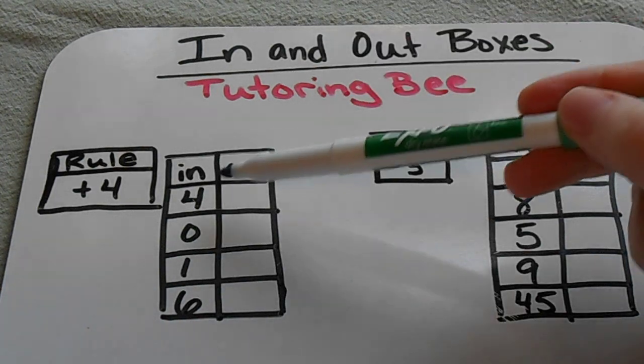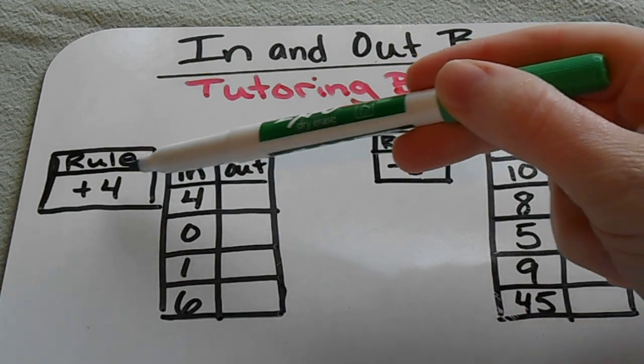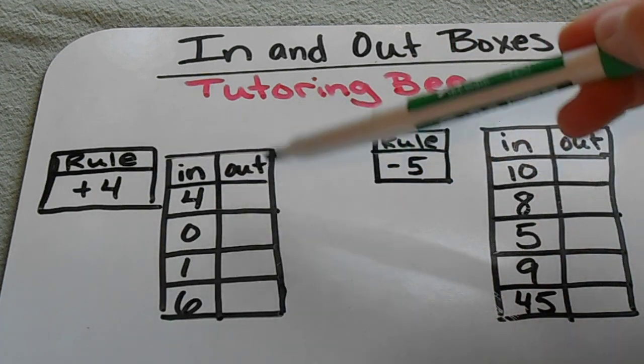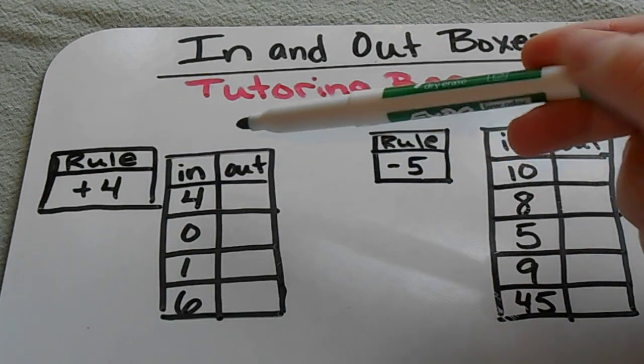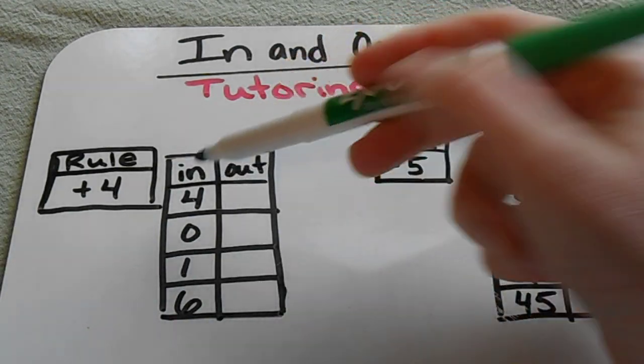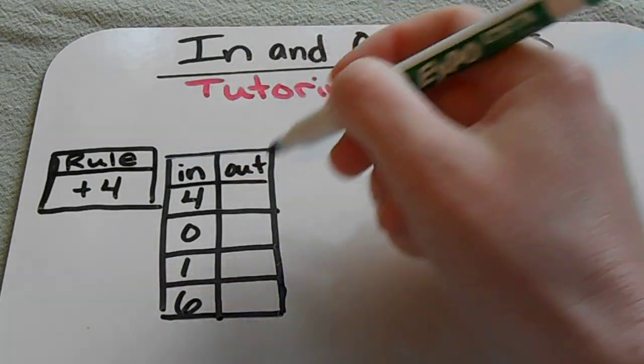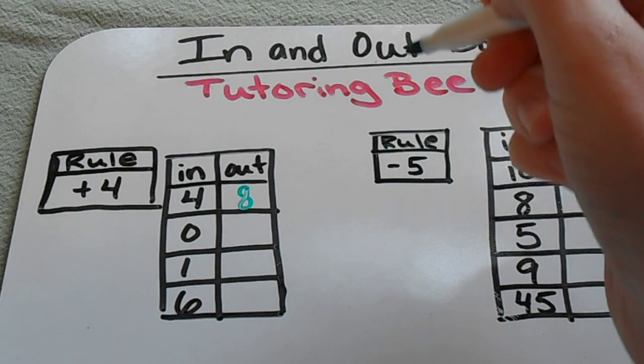So an in and out box is just a simple box that gives you an input number and then according to this rule that's listed over here, the number that comes out of the box or the machine will be affected based on this rule. So if we put a 4 in and we add 4 to it, because that's what our rule tells us to do,